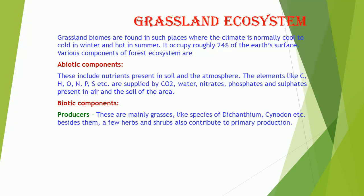Biotic Components. Producers: These are mainly grasses, like species of Dichanthium, Cynodon, etc. Besides them, a few herbs and shrubs also contribute to primary production.